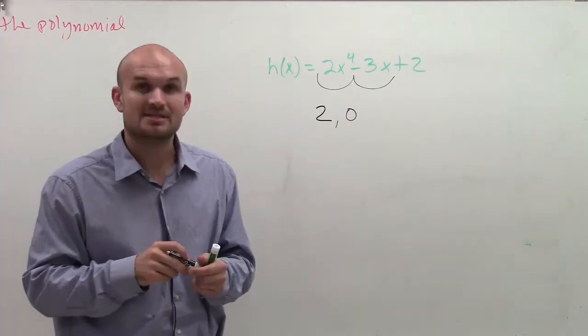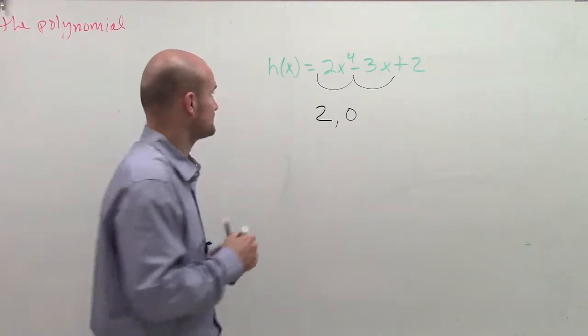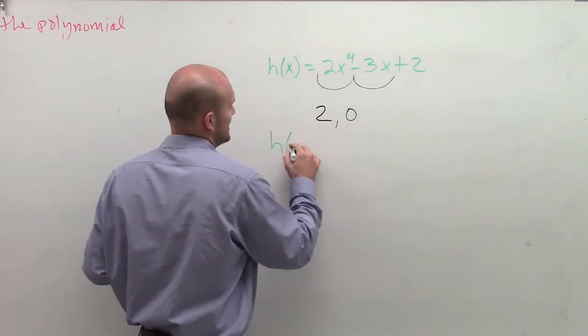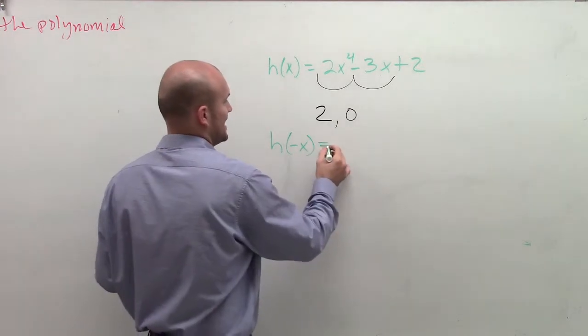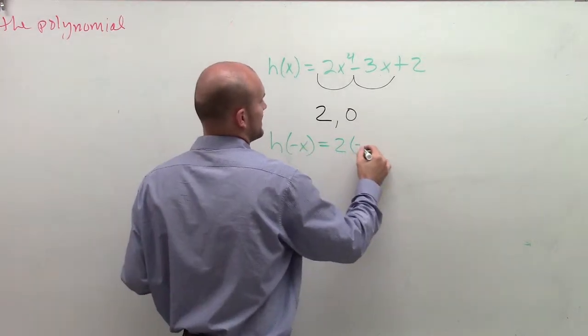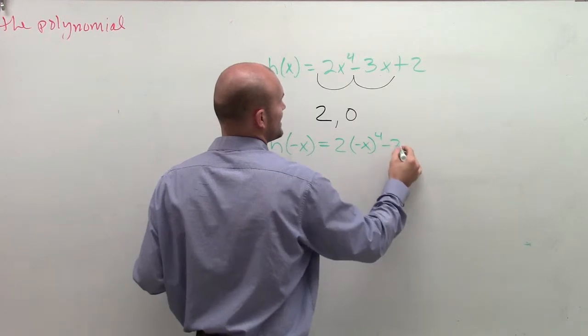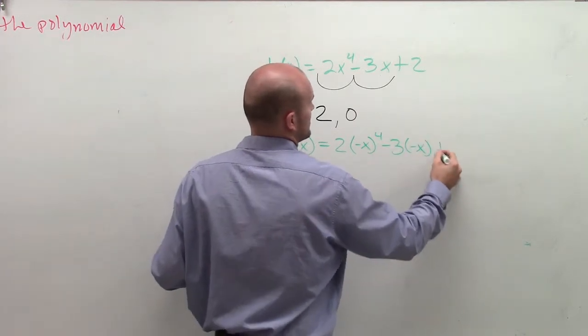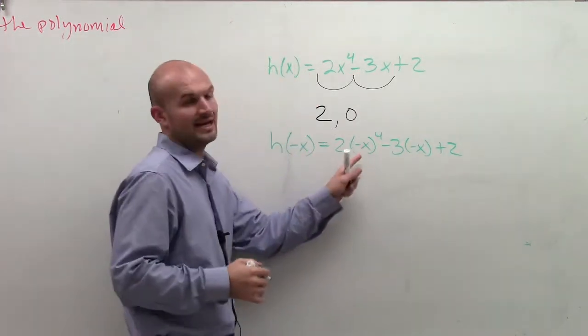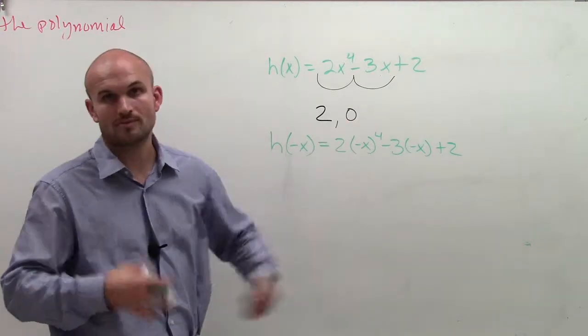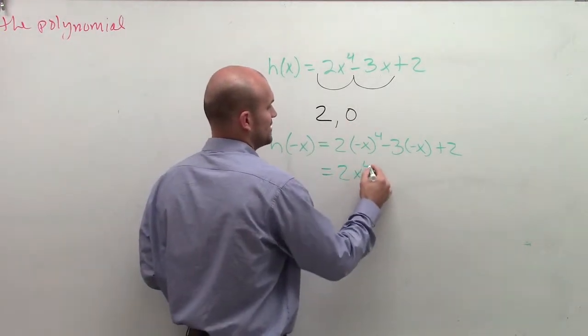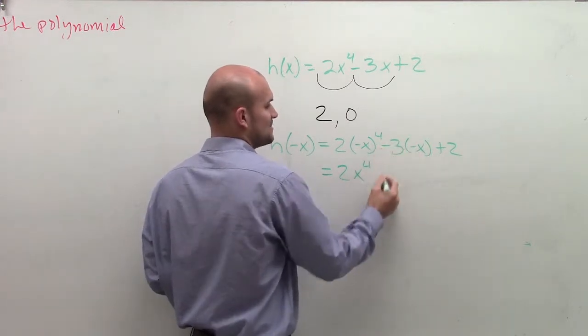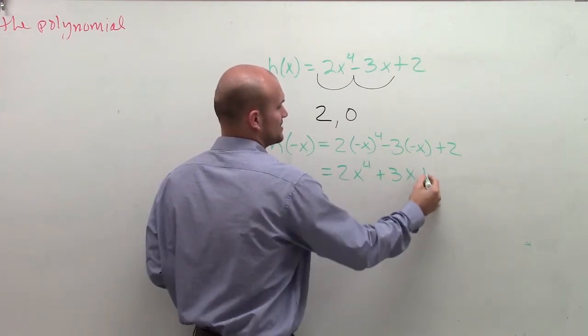So now all we need to do is take the test for the number of negatives. If I'm going to test the negatives, I'm now going to input h of negative x. So I have 2(-x)^4 - 3(-x) + 2. Well, negative x raised to the fourth power, since it's an even power, is always going to produce an even number. So I have 2x^4. Negative x times negative three is going to be positive 3x plus 2.